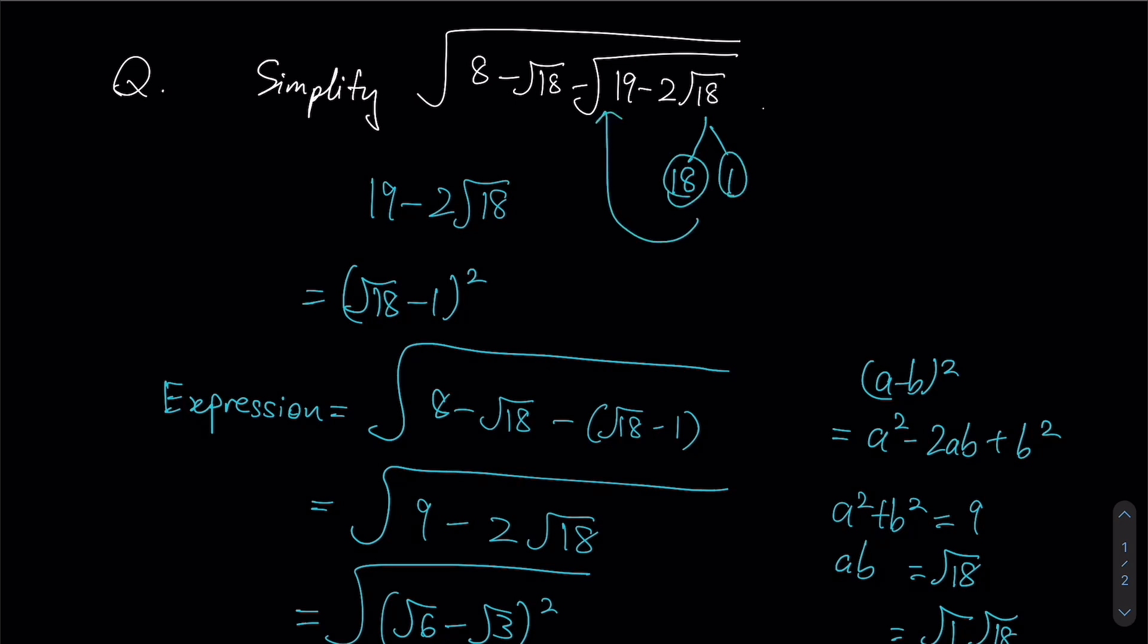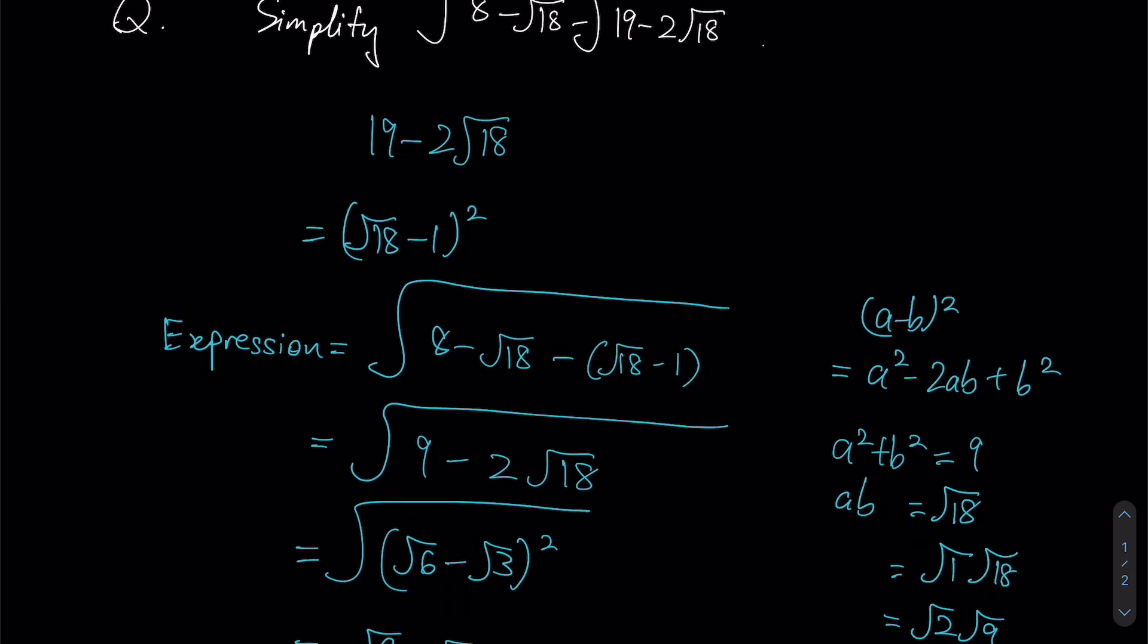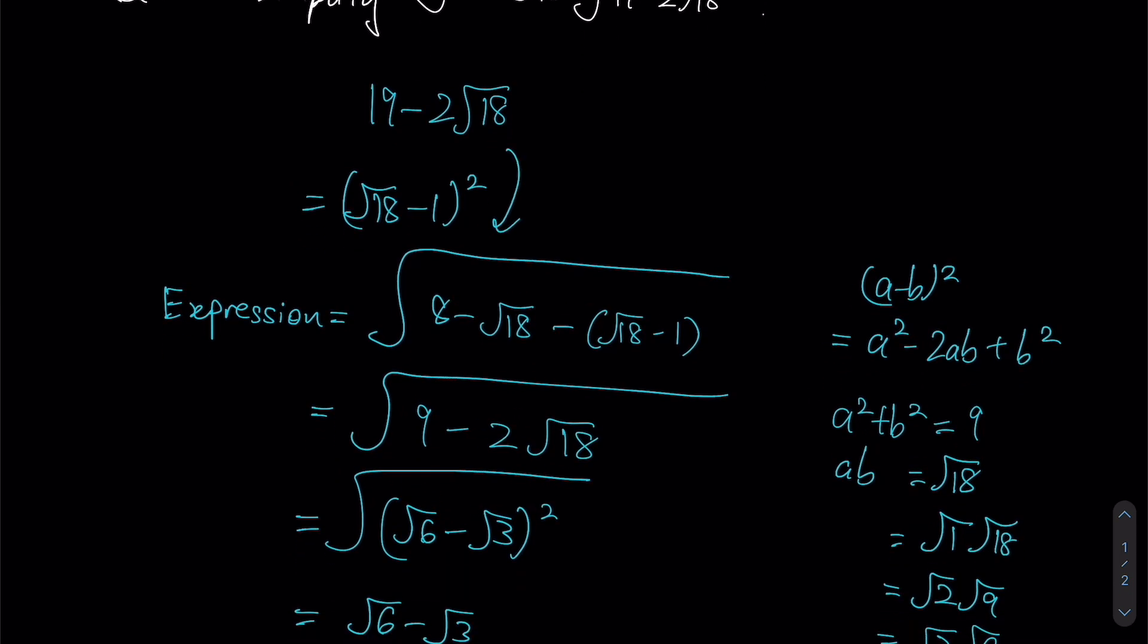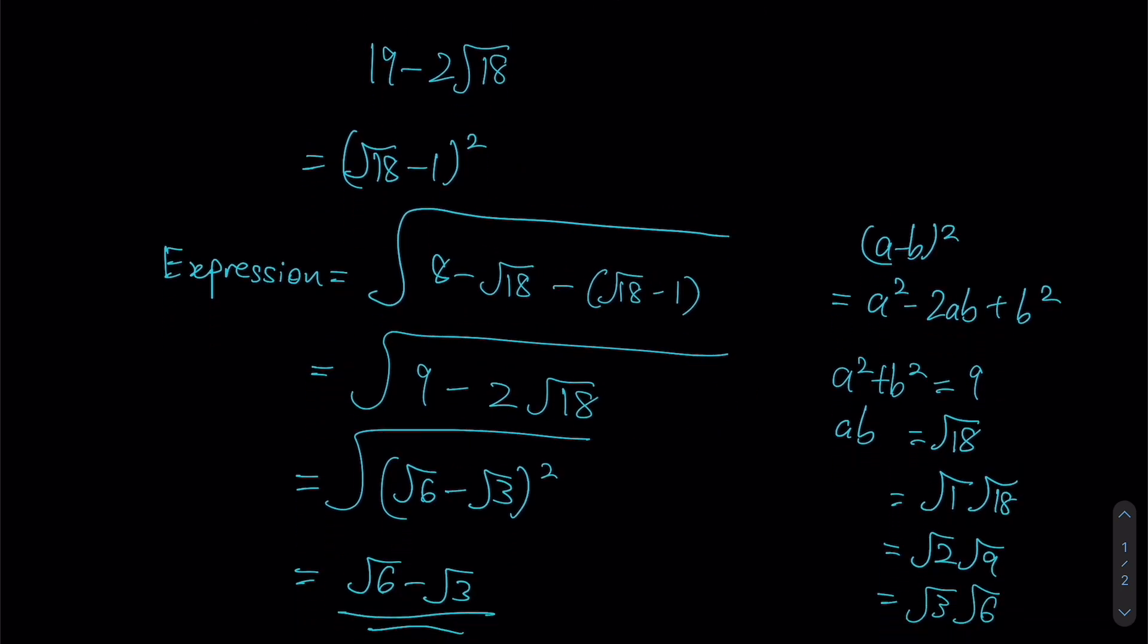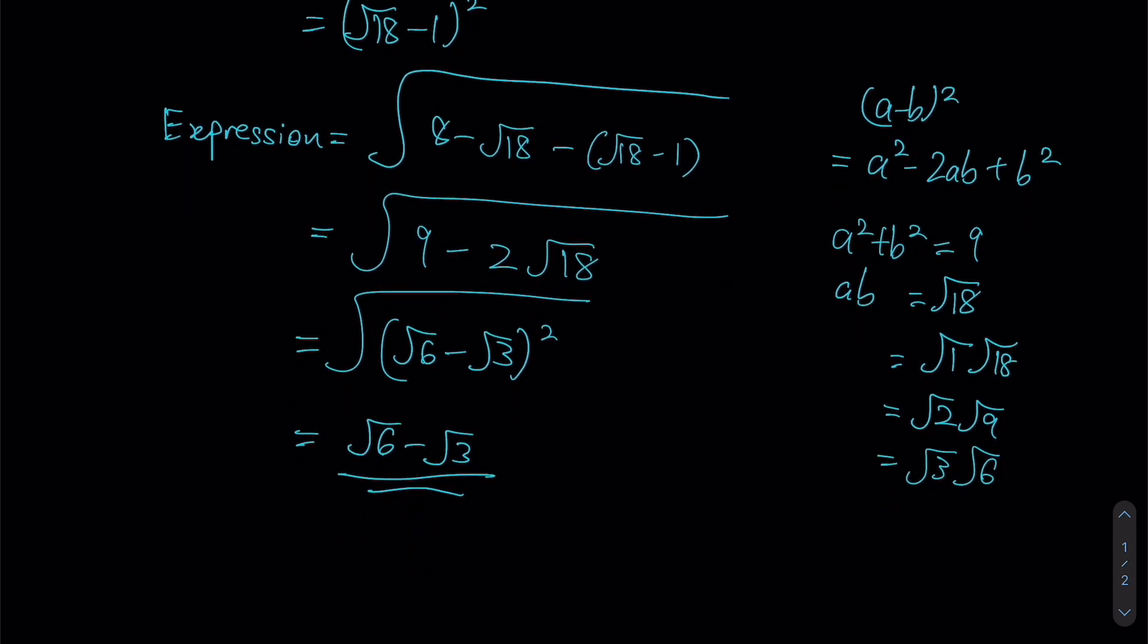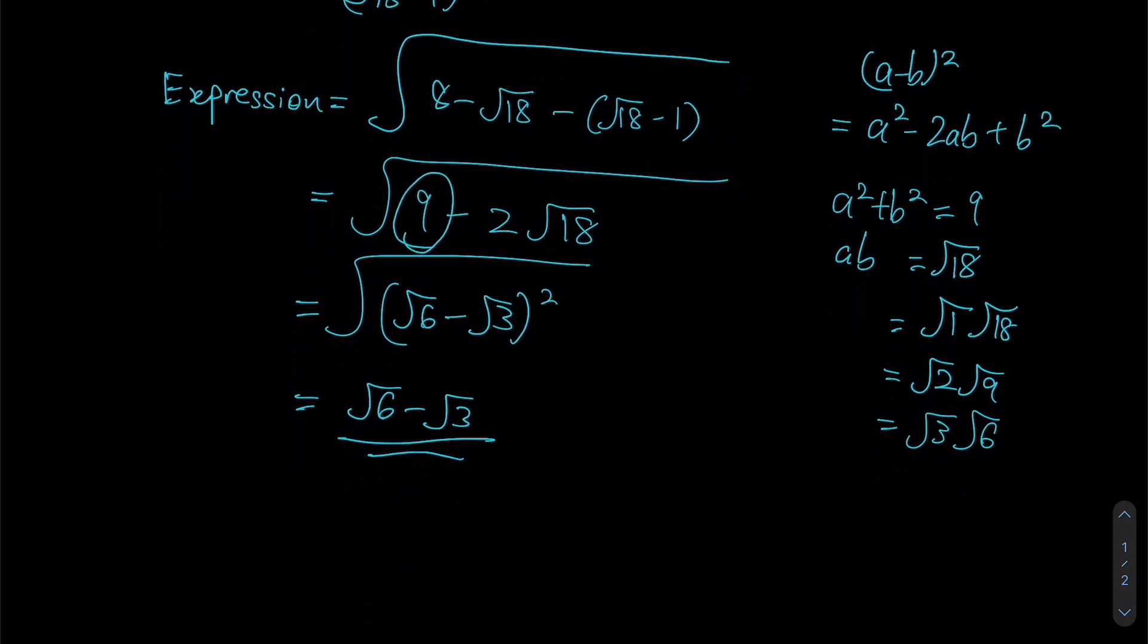As shown over here, once we have resolved that, we now have one more square root to resolve over here, the overarching square root. This time instead of 19, we now have 9, so we're going to have to find a separate pair of values that will give us 18 as a product.